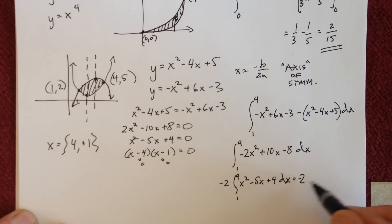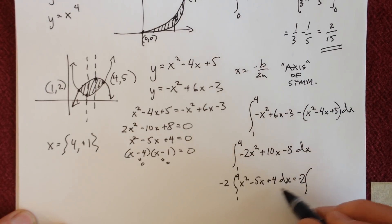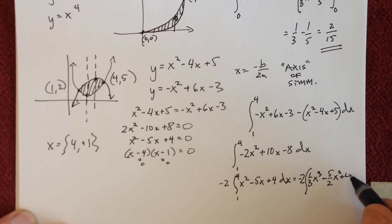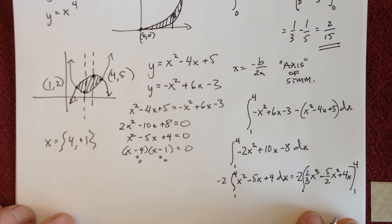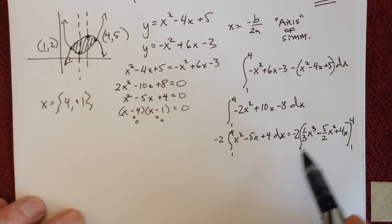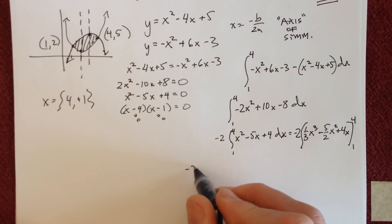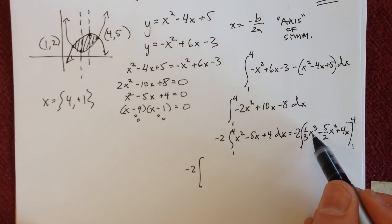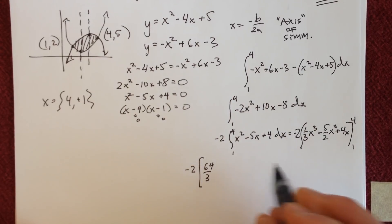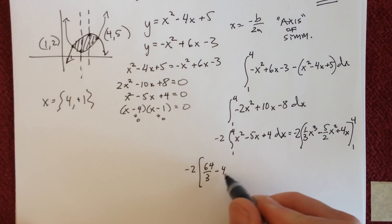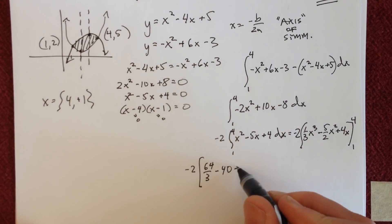Integrating gives negative 2 times [1/3 x³ minus 5/2 x² plus 4x], evaluated from 1 to 4. Now it's just a matter of grinding that out. Plugging in 4: that's 64/3, minus 5/2 times 16 which is 40, divided by 2 is 8... so minus 40, plus 16.